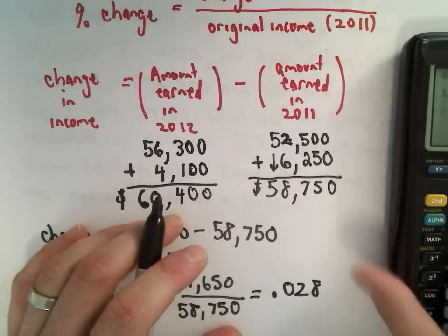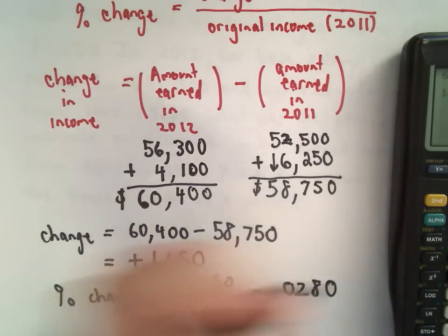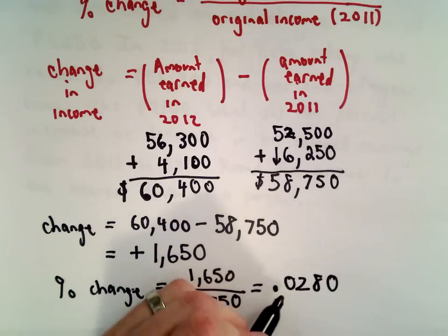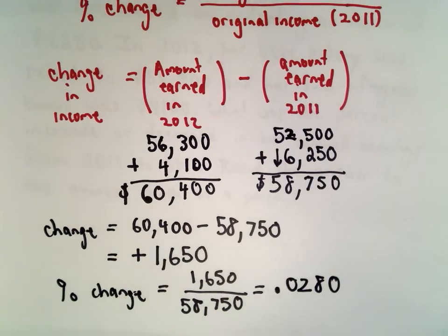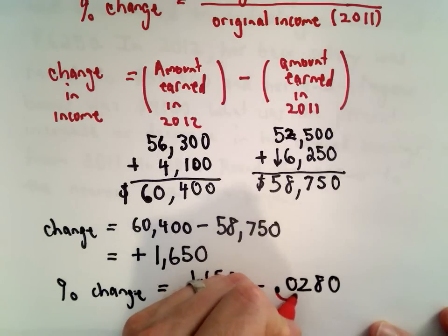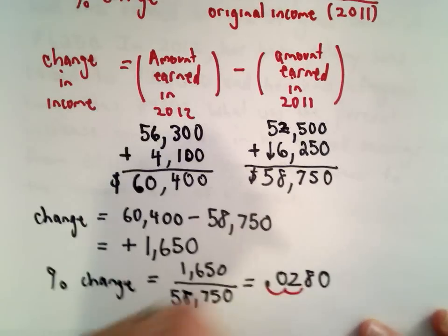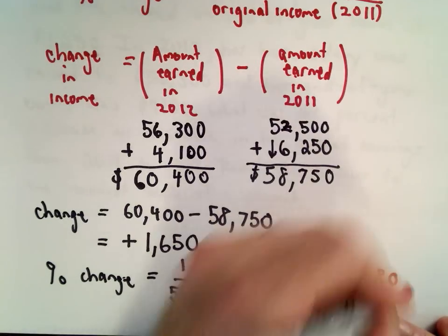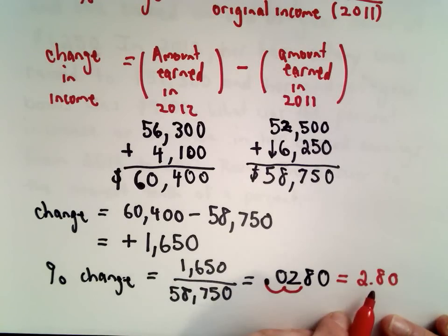And we want to round to the nearest tenth of a percent. So to convert from a decimal to a percentage, recall that you move the decimal place two places to the right. So if I write this as a decimal, I would have 2.8, excuse me, if I write this decimal as a percentage, I would have 2.80%.